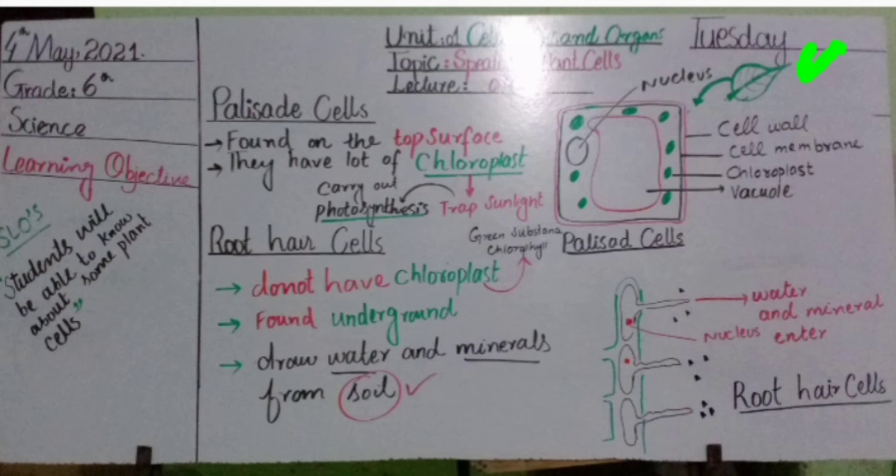The outer covering of the palisade cells is the cell wall, then the cell membrane, and then the green colored organelle called the chloroplast. The large structure present in the center of the cell is called the vacuole — the large vacuole is present in plant cells. The dark structure I have underlined is the nucleus.